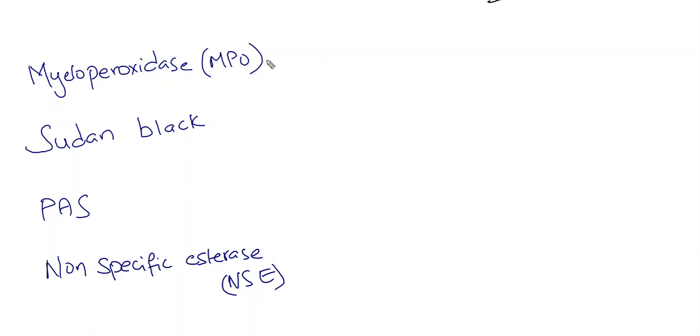You have to remember this as many questions come here. Both myeloperoxidase and Sudan Black are positive for myeloid lineage, except they are negative in AML M0, M6, and M7. I will discuss these things in FAB classification.